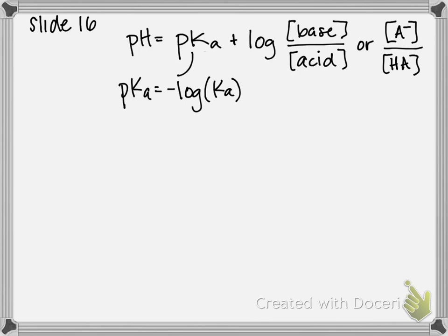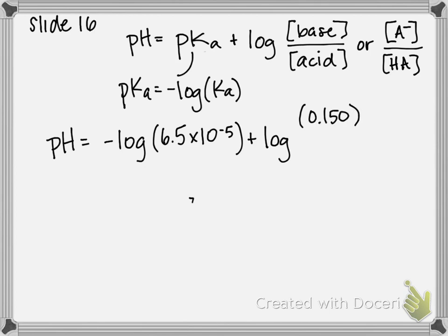I'm going to plug all the numbers into the equation. pH equals negative log of Ka (my pKa), which is 6.5 times 10 to the negative 5, plus log of my base concentration (sodium benzoate at 0.150) over my acid concentration (0.050).